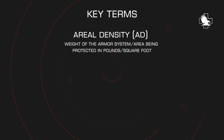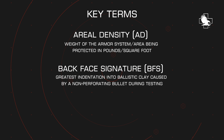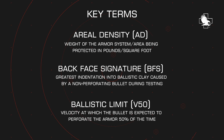Some key terms for ballistic data information are: aerial density, or AD, which is simply the weight of a 12-inch by 12-inch swatch of the armor panel; backface signature, which is the greatest indentation into the ballistic clay caused by a non-perforating bullet; and ballistic limit, also known as V-50, which is the velocity at which the bullet is expected to perforate the armor 50% of the time.